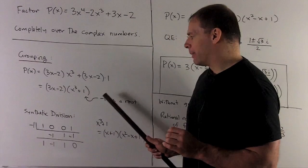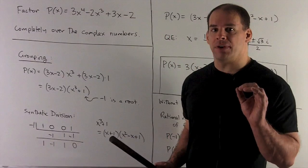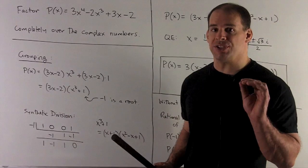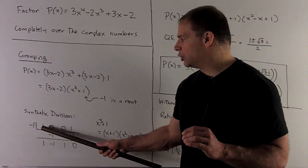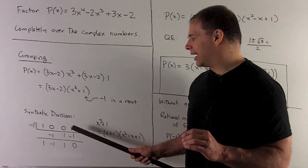Then I'm going to take the coefficients of x^3 + 1. For the powers that don't appear, we're going to use coefficient 0. So it'll be x^3 gets a 1, x^2 gets a 0, x gets a 0, and then I have a 1.